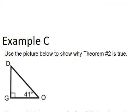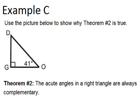All right, the last example says use the picture below to show why theorem number two is true. And theorem number two says the acute angles in a right triangle are always complementary. So what that theorem means is that the two non-right angles in a right triangle will always be complementary, or in other words, add to 90 degrees. So we want to figure out why that is true.